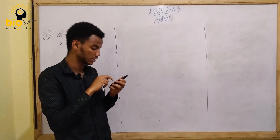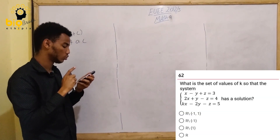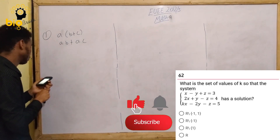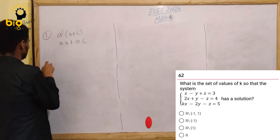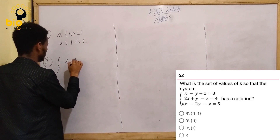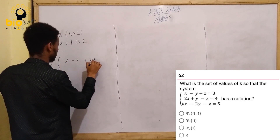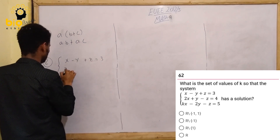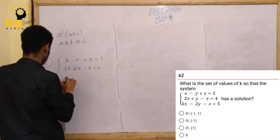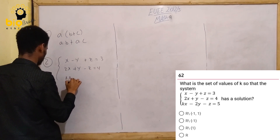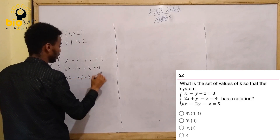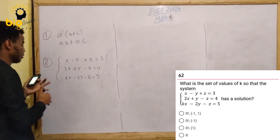I will tell you what is the set of values of K so that the system has a solution. The system is: x minus y plus z equals 3, then 2x plus y minus z equals 4, and Kx minus 2y minus z equals 5.